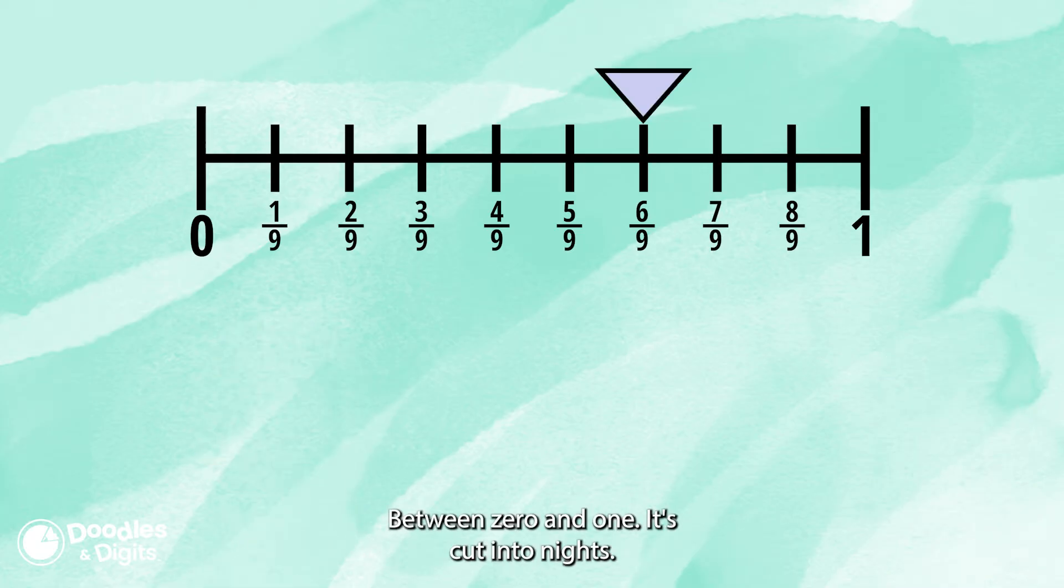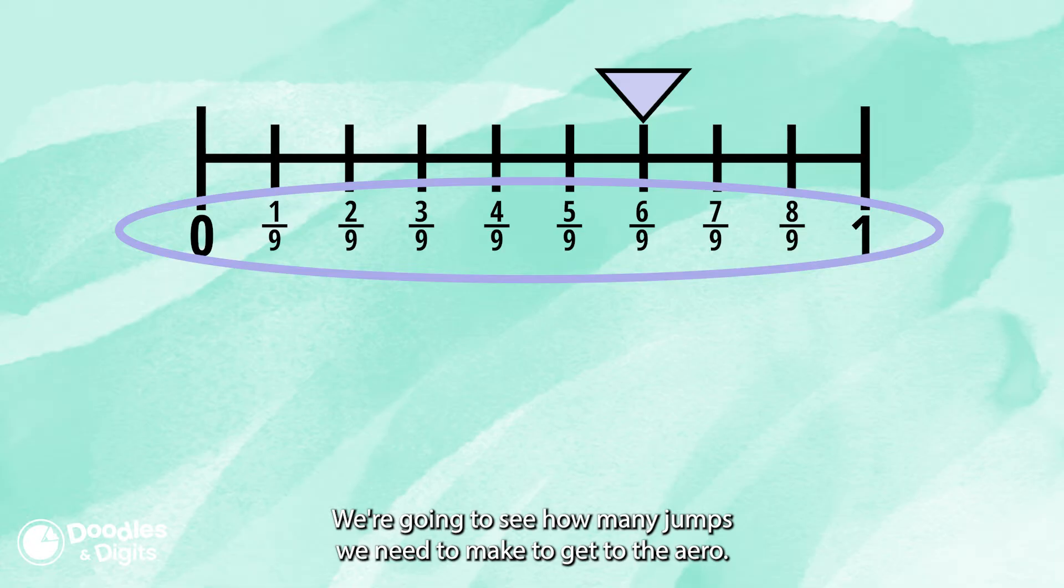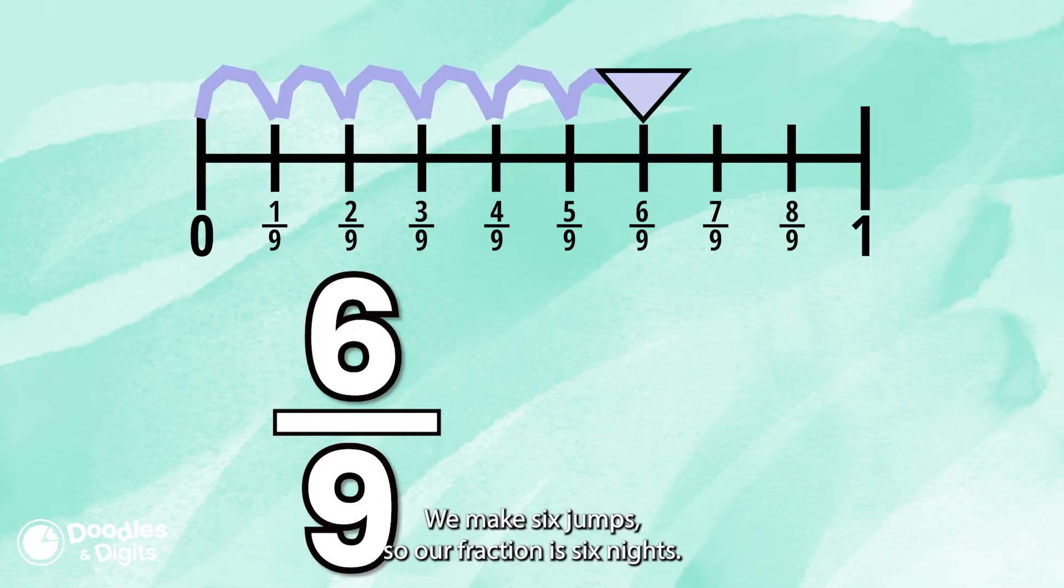Between zero and one, it is cut into ninths. We're going to see how many jumps we need to make to get to the arrow. We make six jumps, so our fraction is six ninths.